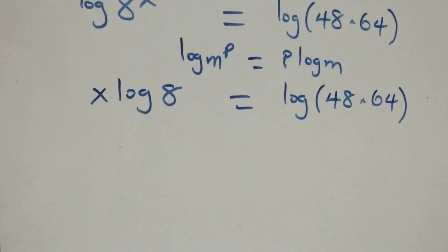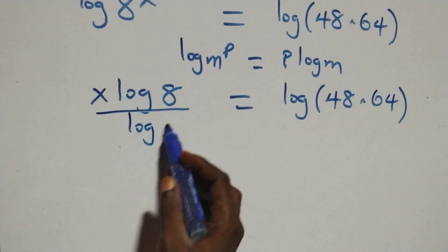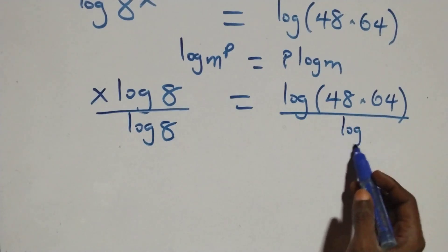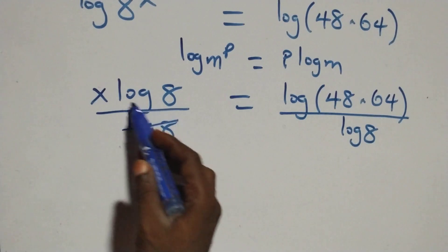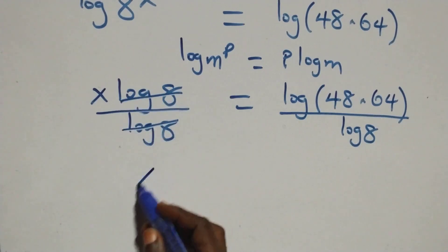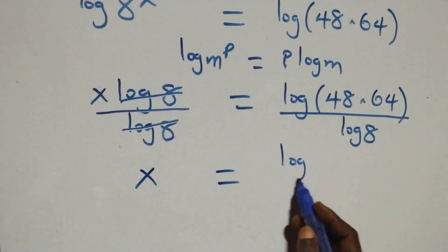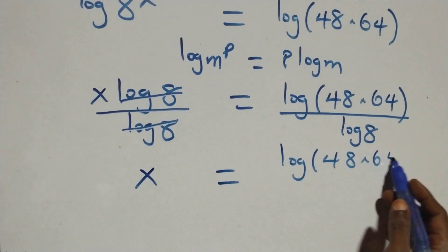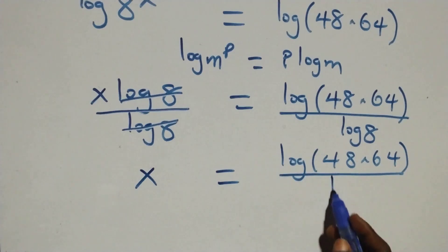From here we divide both sides by log 8. The log 8 terms cancel each other, leaving us with x equals log(48 times 64) over log 8.